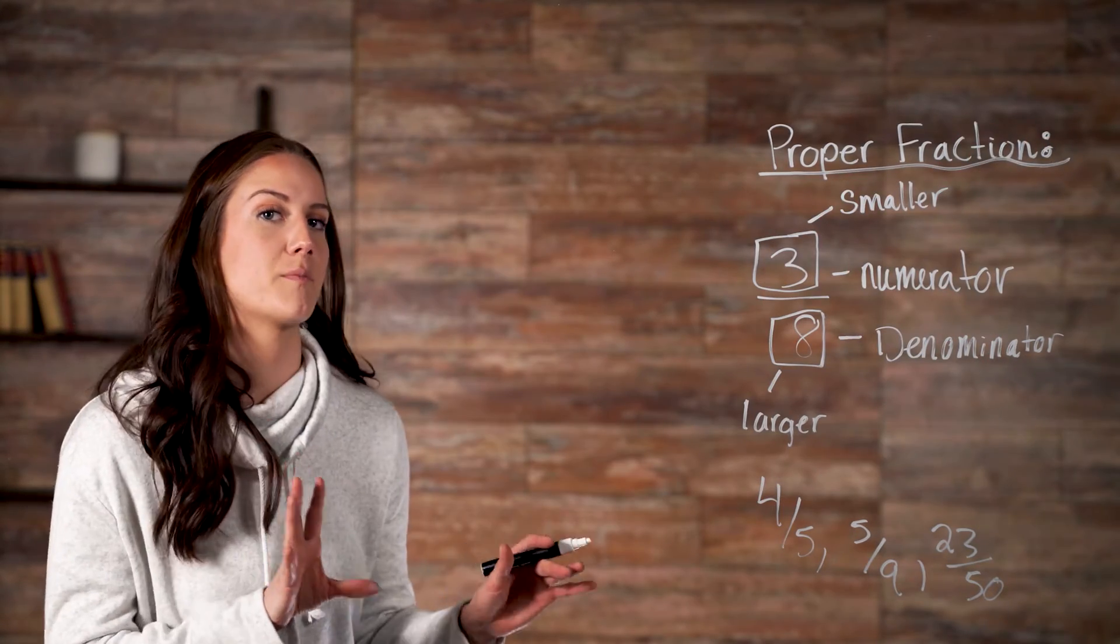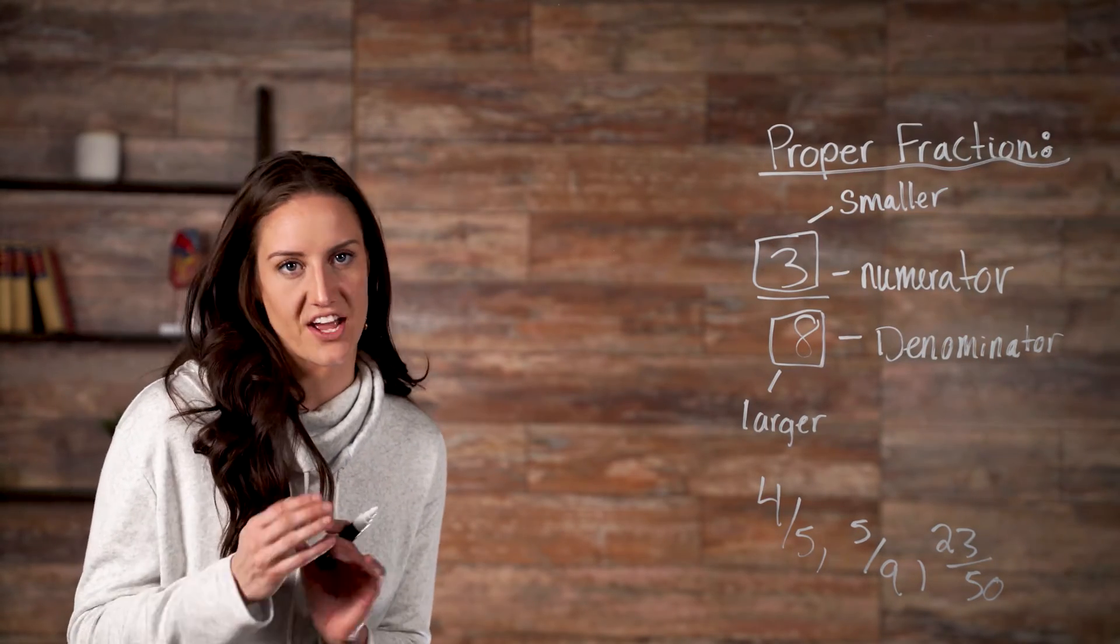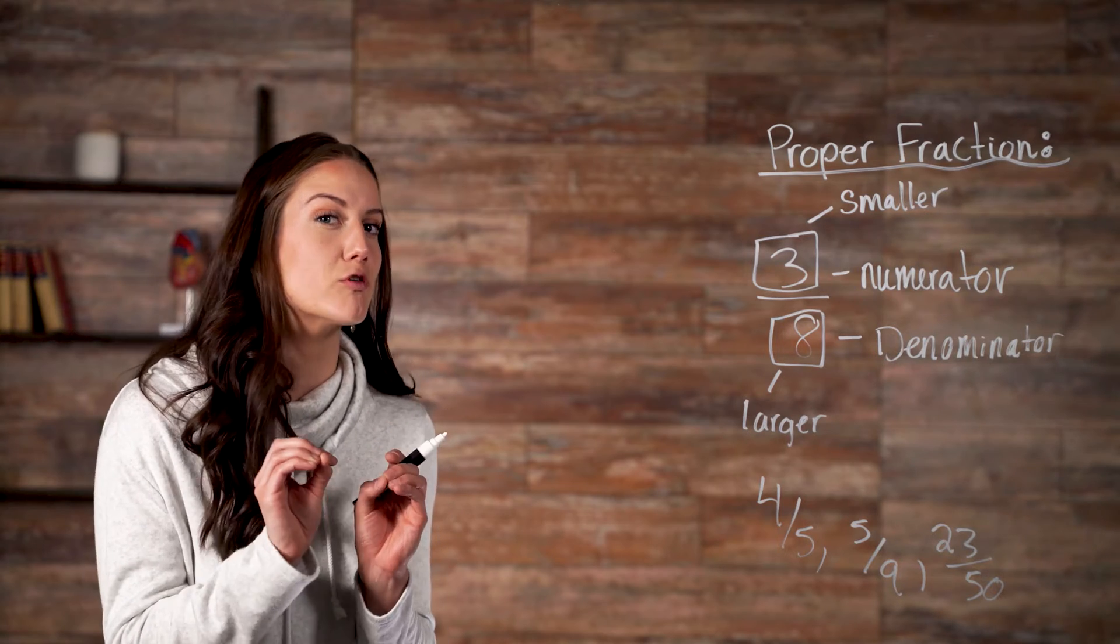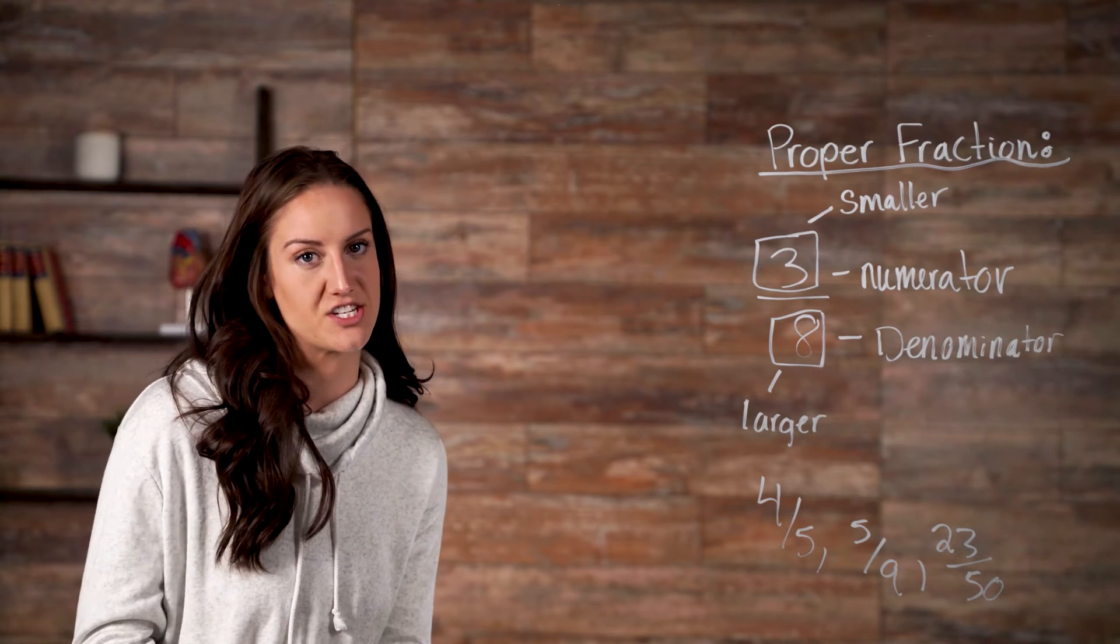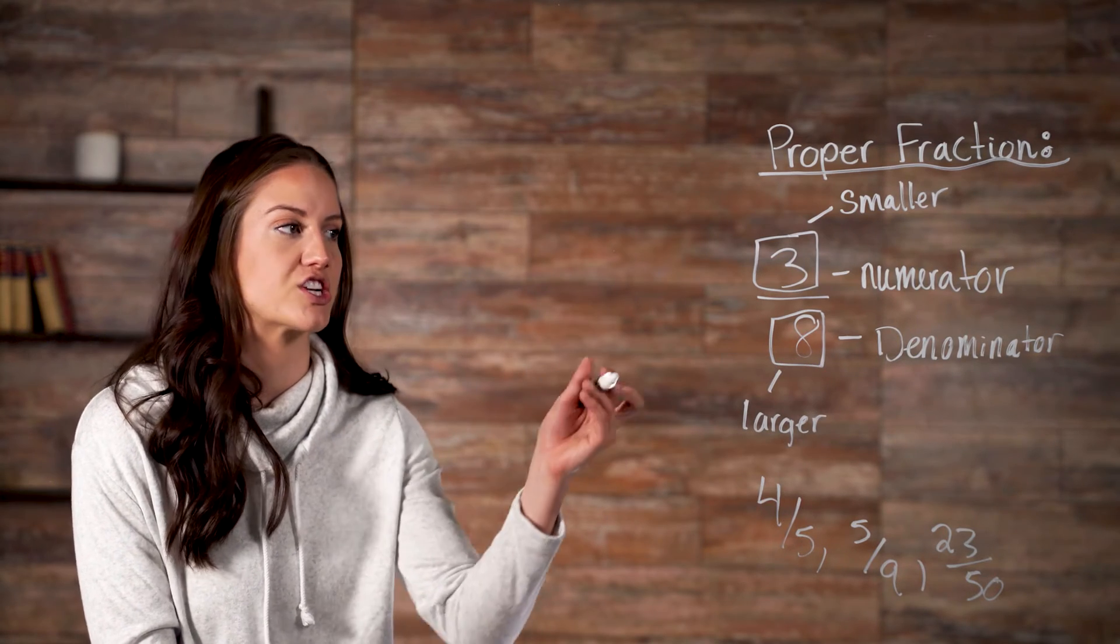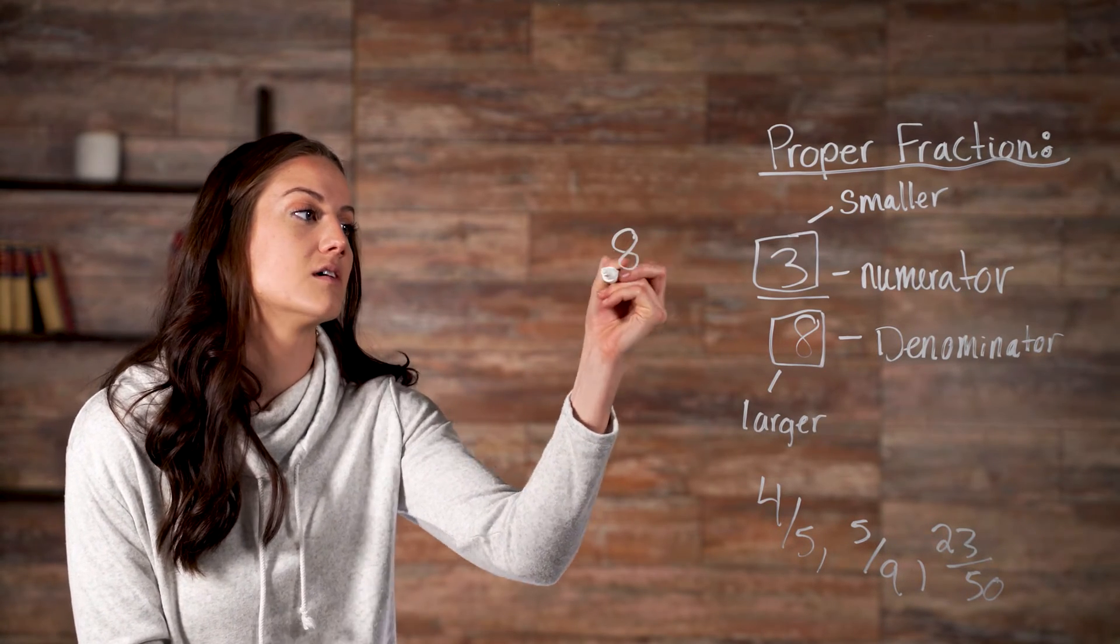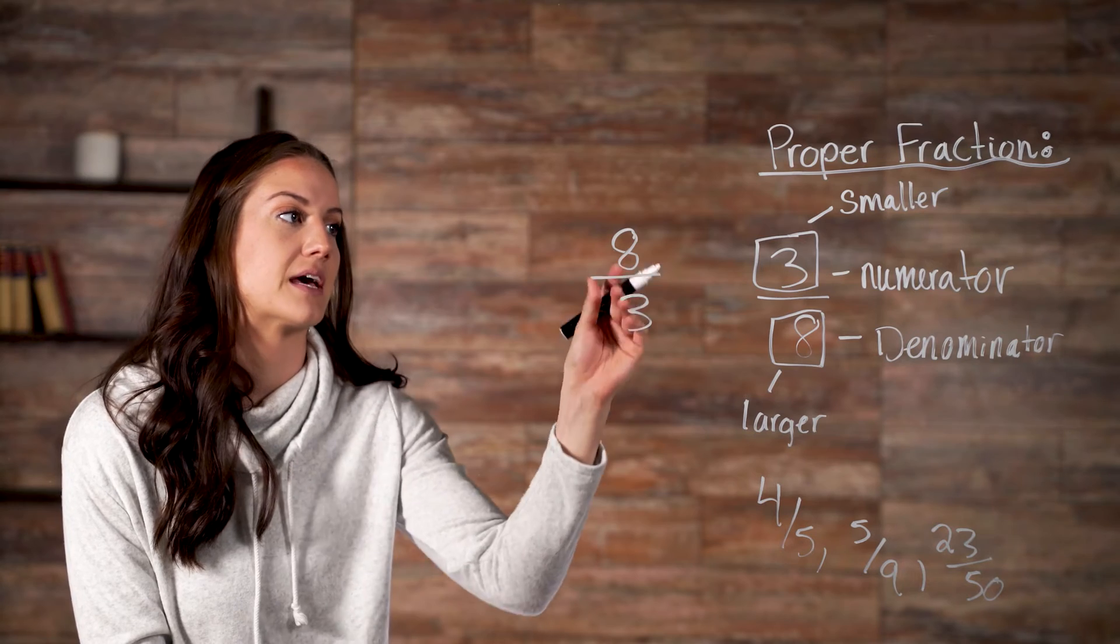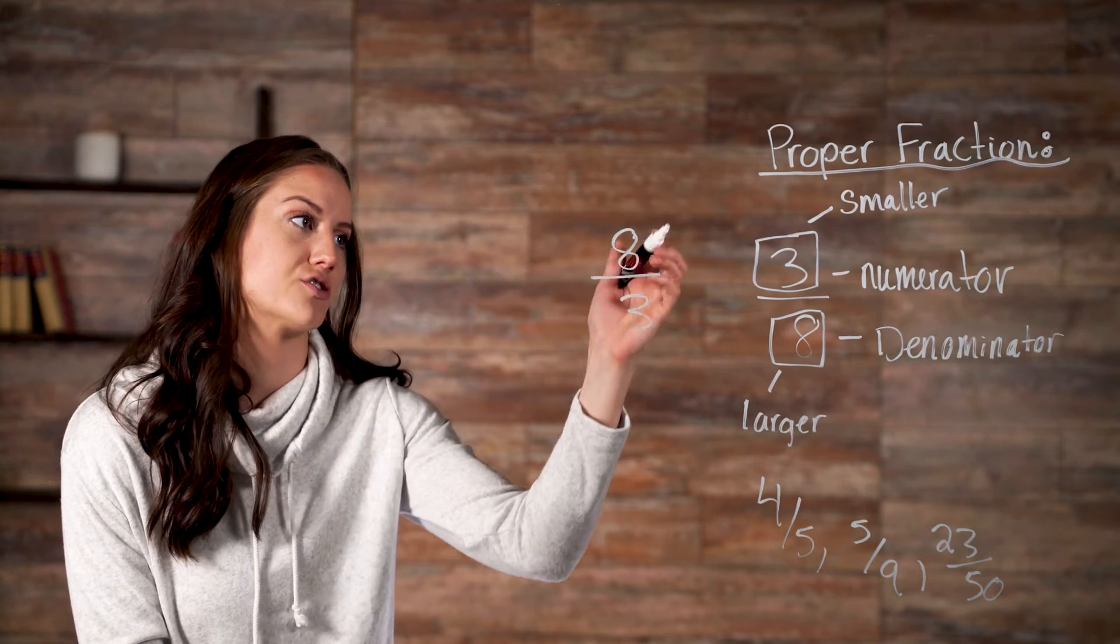An improper fraction is the opposite of a proper fraction, in that the numerator is larger than the denominator. So, while three over eight is a proper fraction, eight over three is an improper fraction, because the numerator is larger than our denominator.